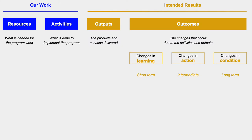The logic model is composed of three elements. The first is the work of an organization, depicted in blue, and it consists of resources and activities. Resources are what's needed to do the work, and activities are what's done with the resources to implement a program.